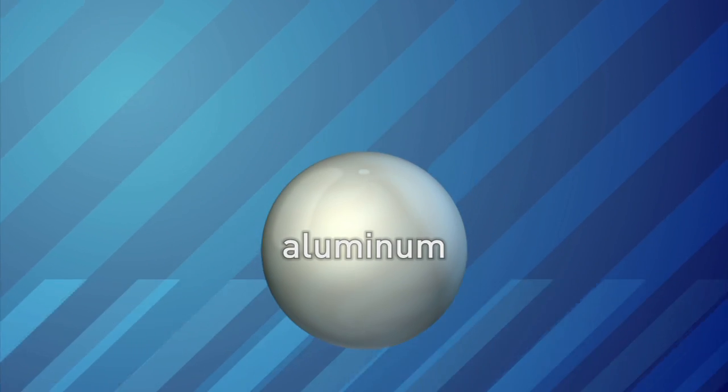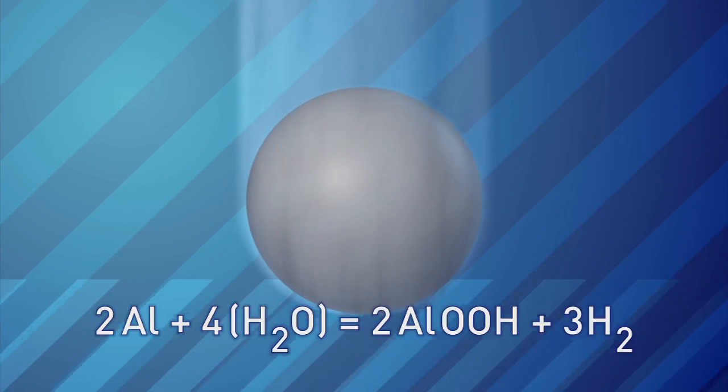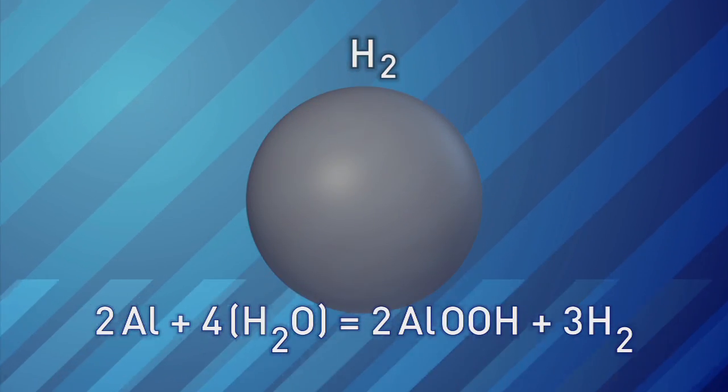If you take aluminum, put it in water, the aluminum will oxidize. It will take the oxygen from the water and it will liberate that hydrogen. The hydrogen will then come off as hydrogen gas, and you'll end up with an aluminum oxide byproduct.